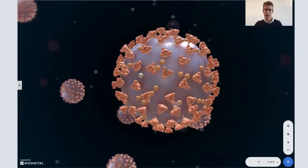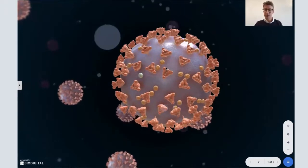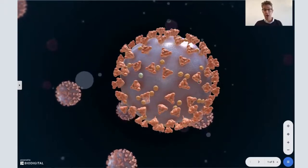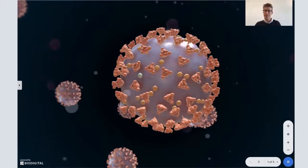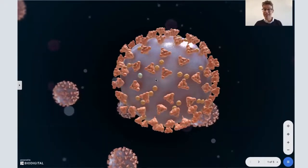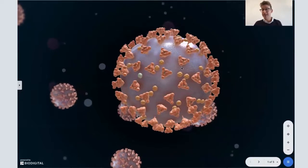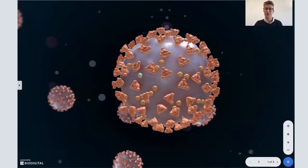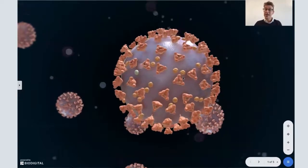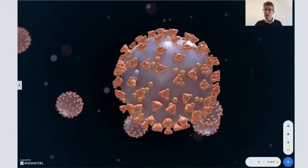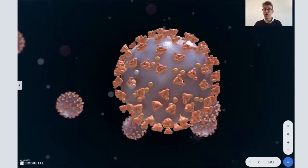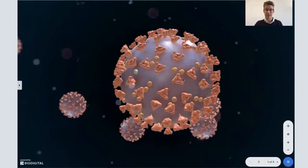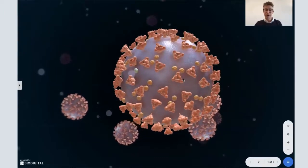So first of all, what is the Delta variant? Well, it was discovered in India in the fall, but it's rapidly spread across the globe. It's estimated that about 99% of new cases in the United Kingdom are the Delta variant. Across Europe, it's estimated by the end of August, it'll be about 90% of new cases will be Delta variant. And here in the United States, somewhere between 25% and 40% of new cases are the Delta variant. So it's very rapidly spreading.